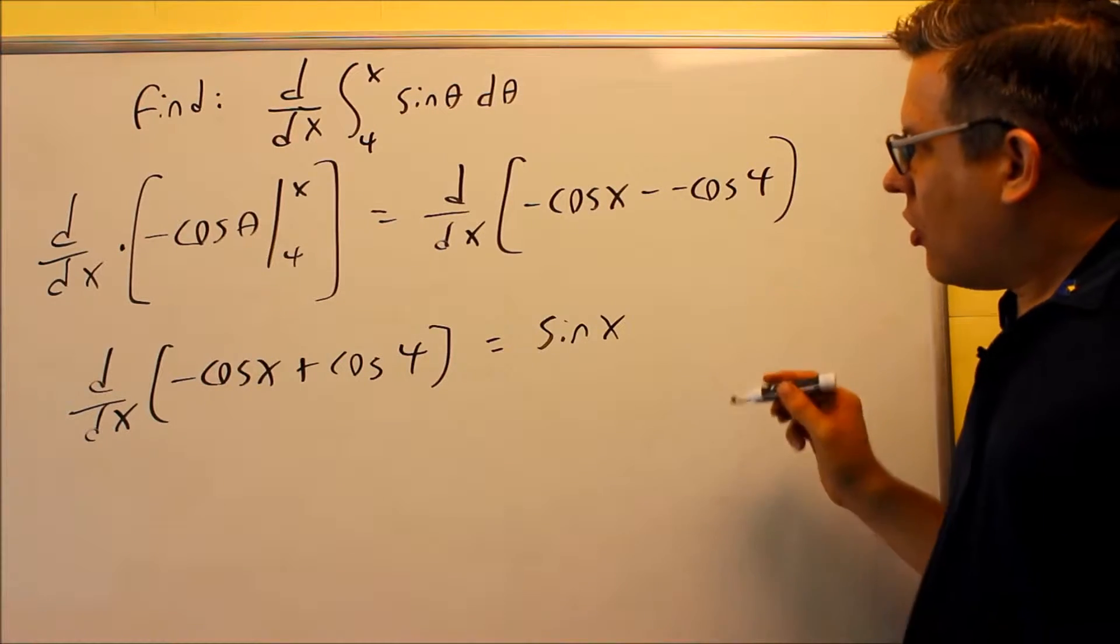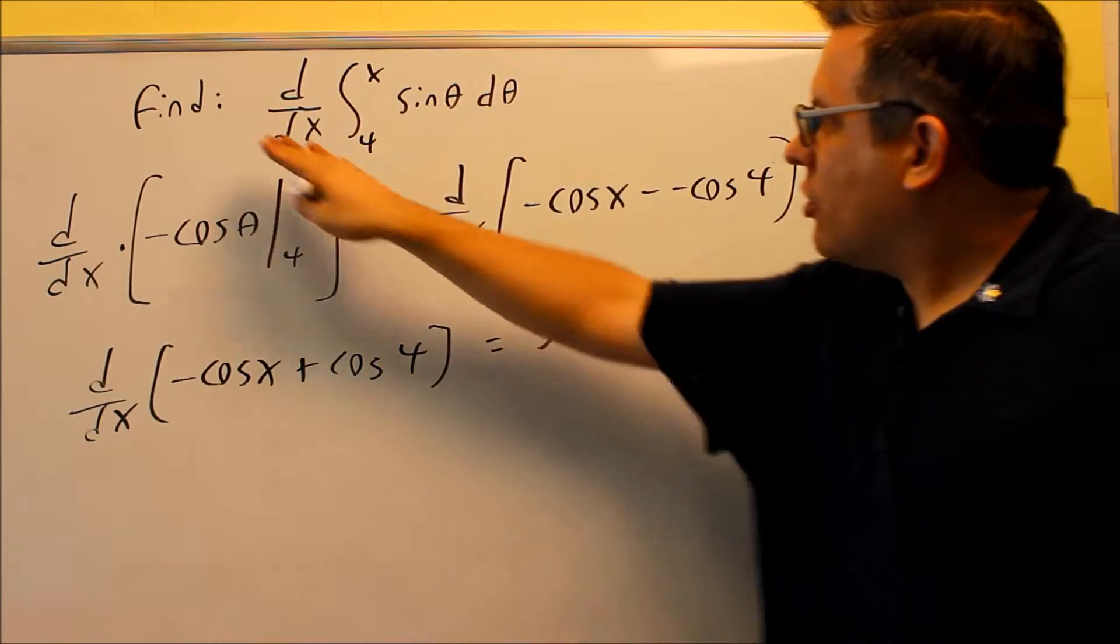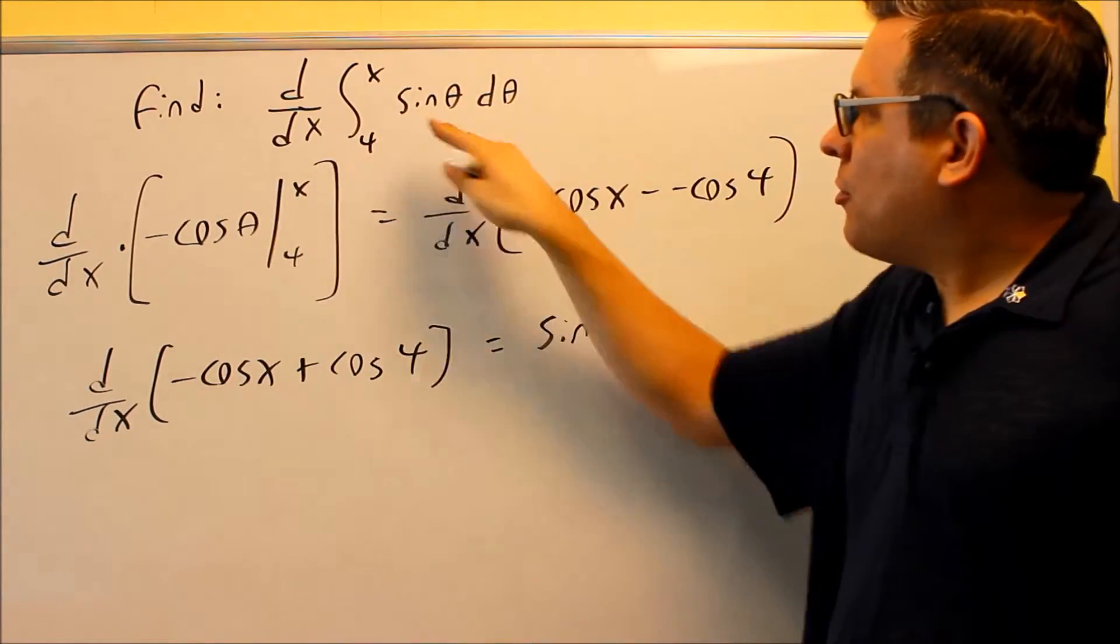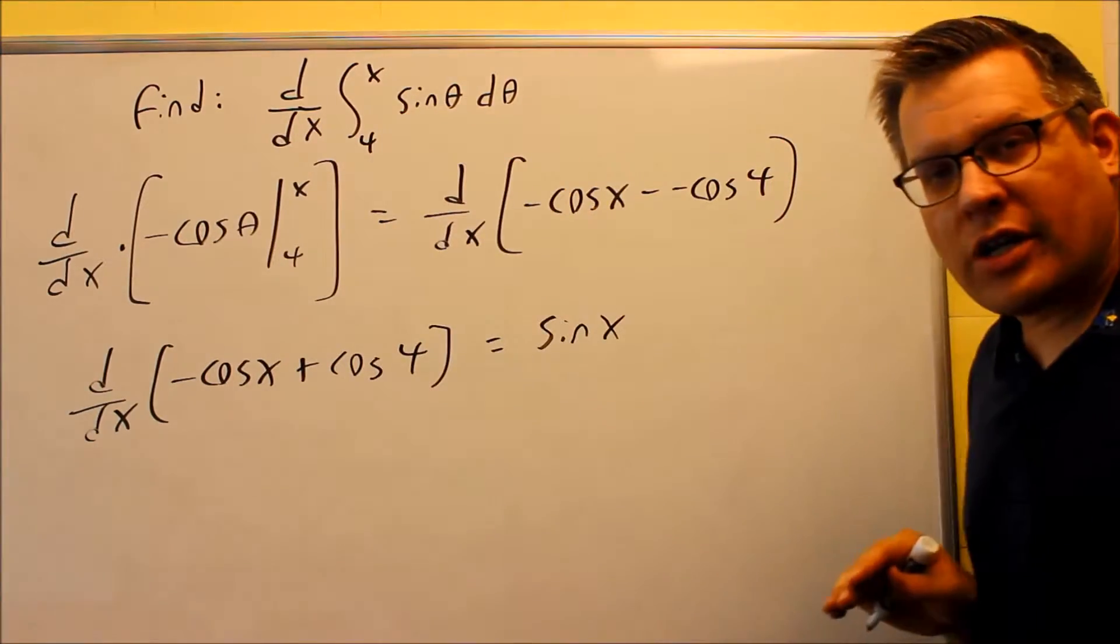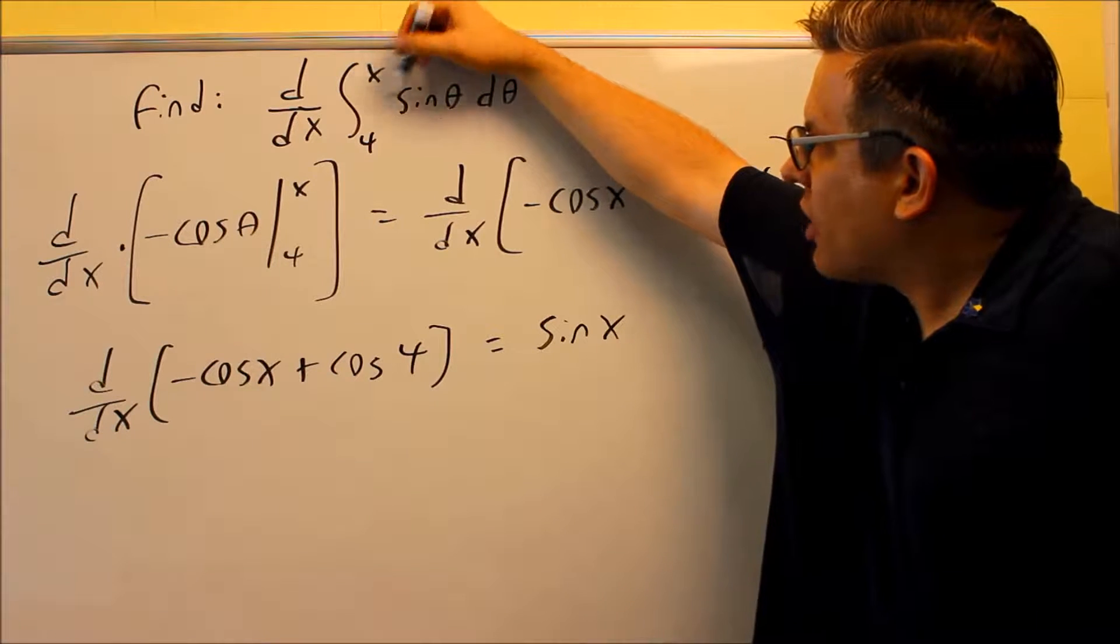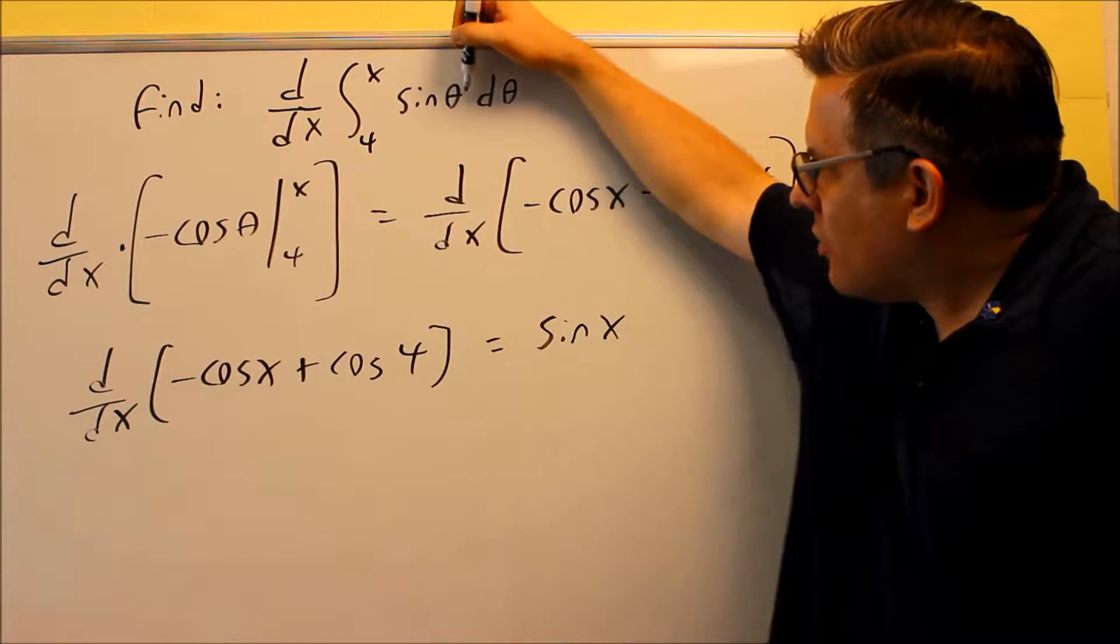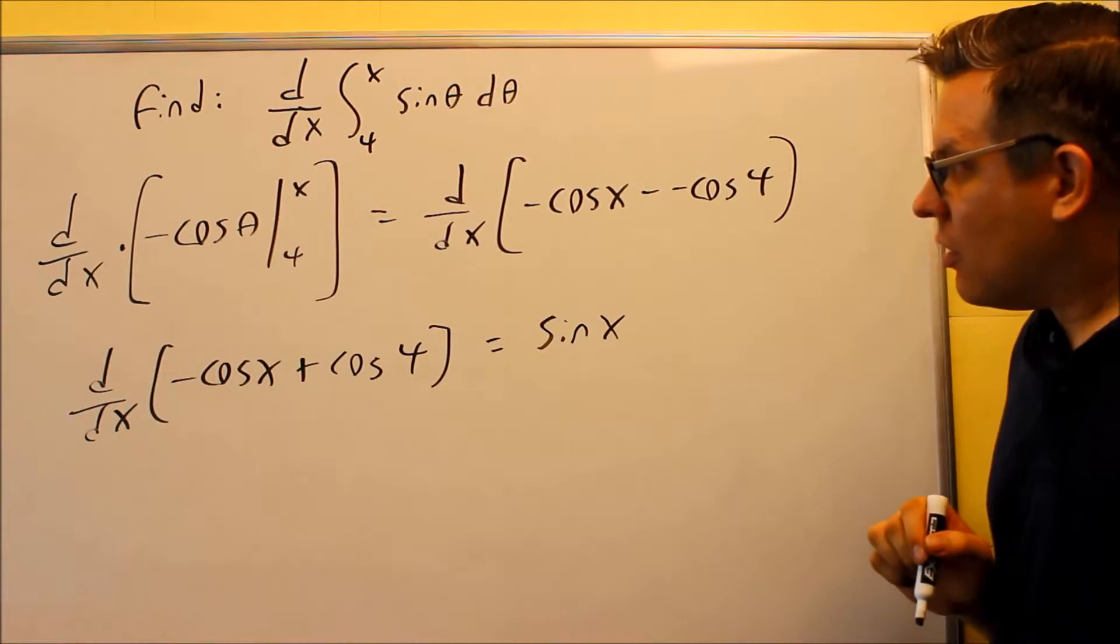So if we take a look at this, what's happening is essentially these are canceling out because we do end up with the same function we had originally. However, you're doing something with this, you're plugging the x into the theta there as a result.